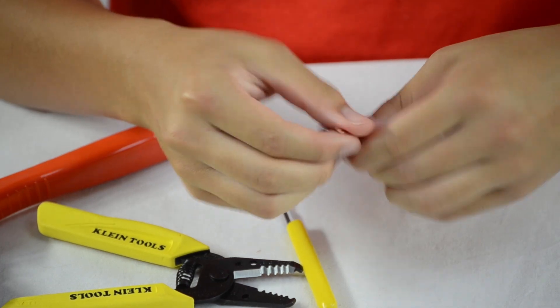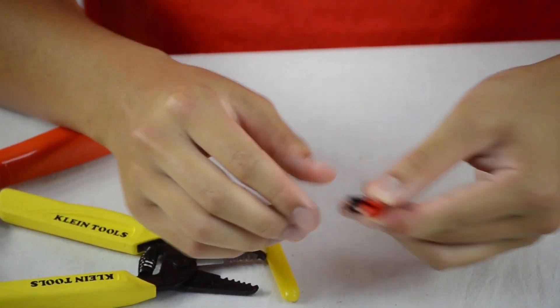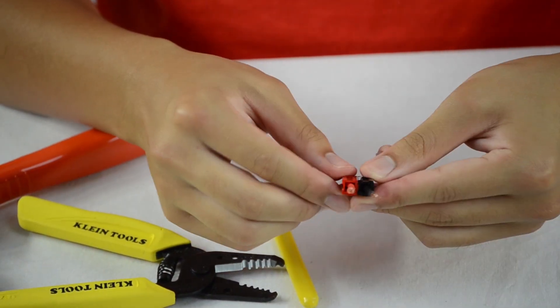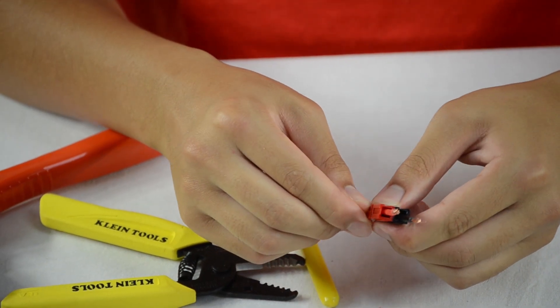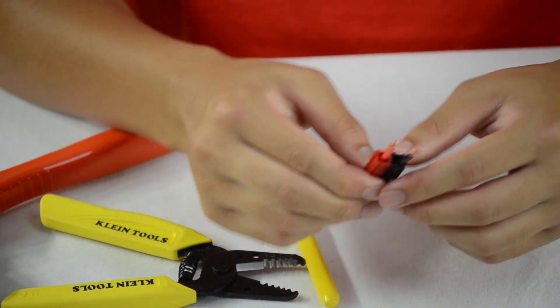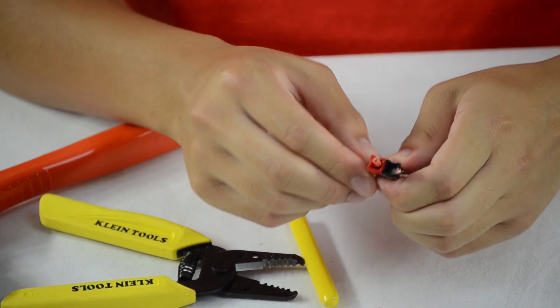Alright, so now we're done with step one. And however many controllers you have, you just want to have the same amount of these setups. So say you have six controllers, you want six of these things. And so now let's move on to step two.